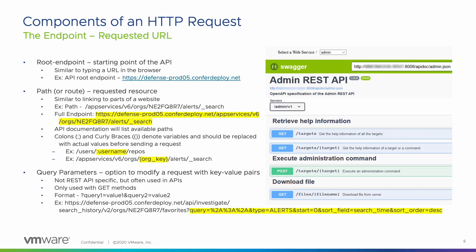It is important to know that a request is made up of four things: the endpoint, the method, the headers, and the data or body. Let's dive into each of these individually. The endpoint is the URL you request. It consists of a root endpoint, a path, and sometimes query parameters.